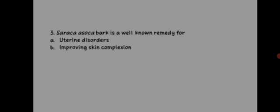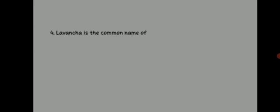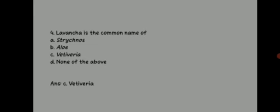Question 3 — 'Saraca asoka bark is a well-known remedy for?' Options: uterine disorders, improving skin complexion, astringent, all of the above. The answer is D — all of the above. Question 4 — 'Lavancha is the common name of?' Options: Strychnos, Aloe, Vetiveria, none of the above. The answer is C — Vetiveria; lavancha is otherwise called khas khas.